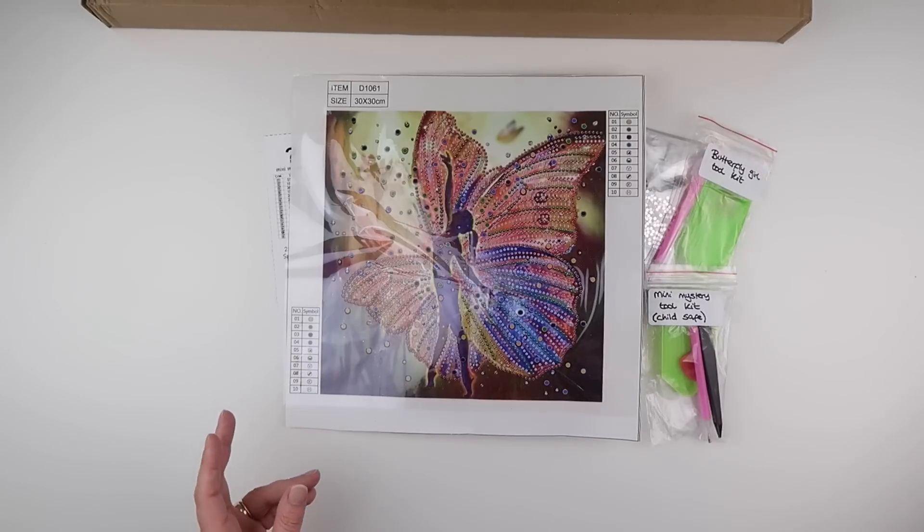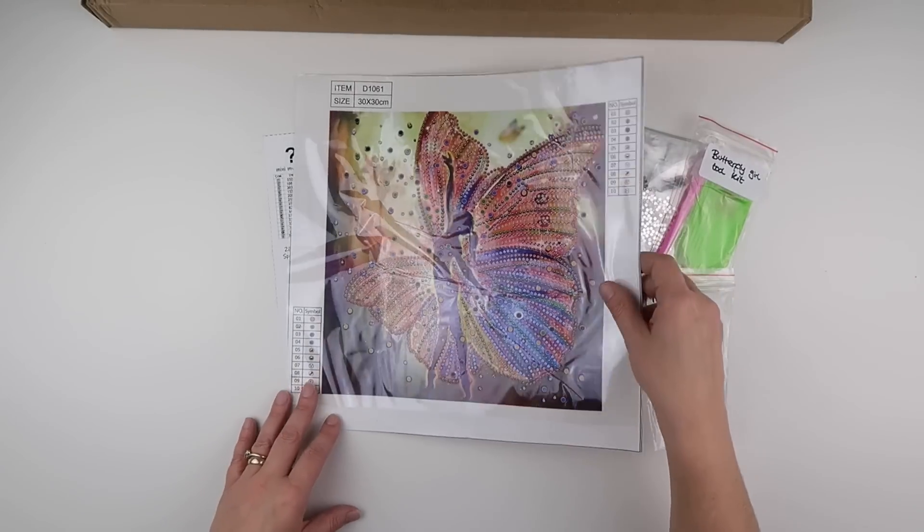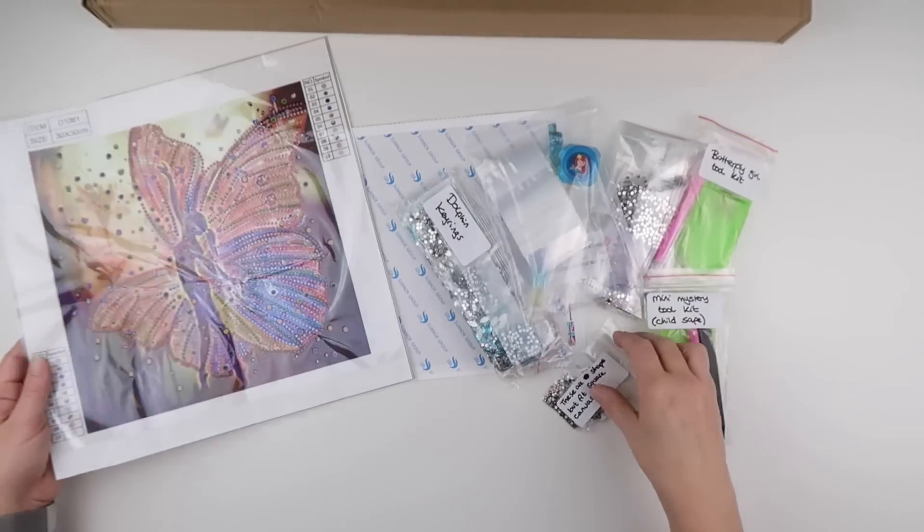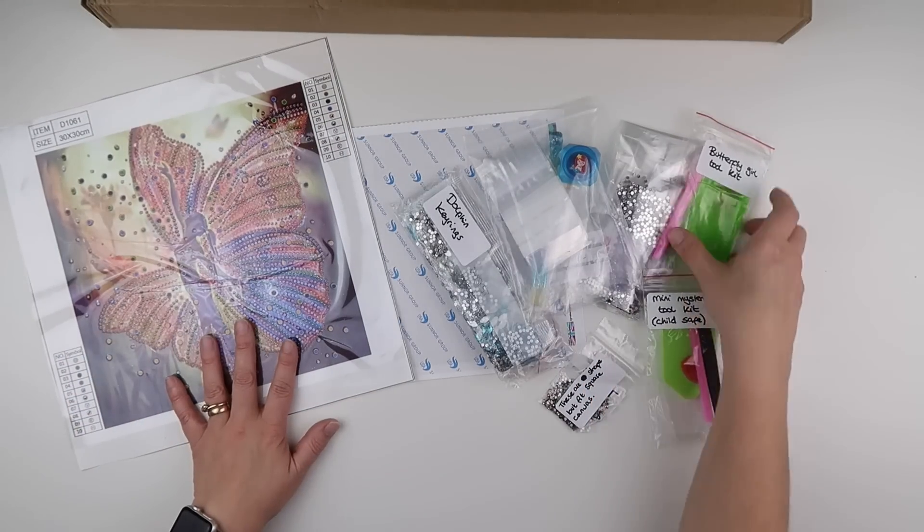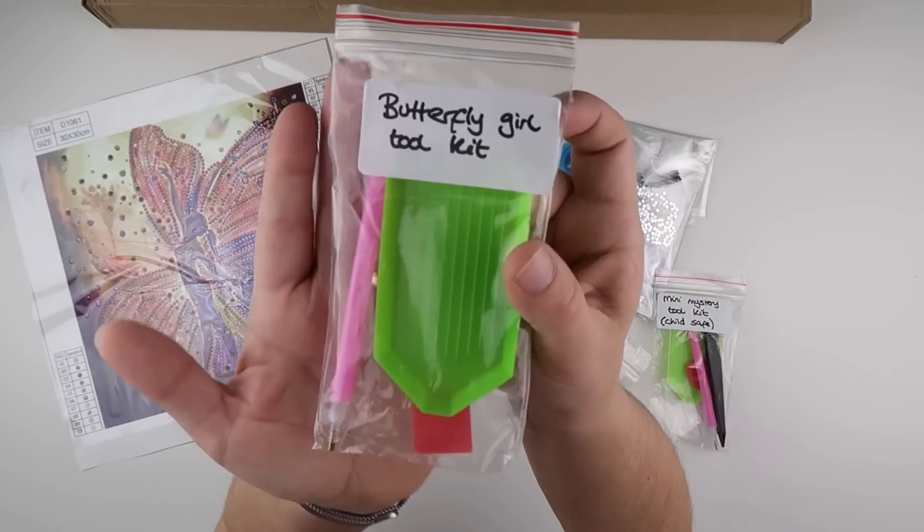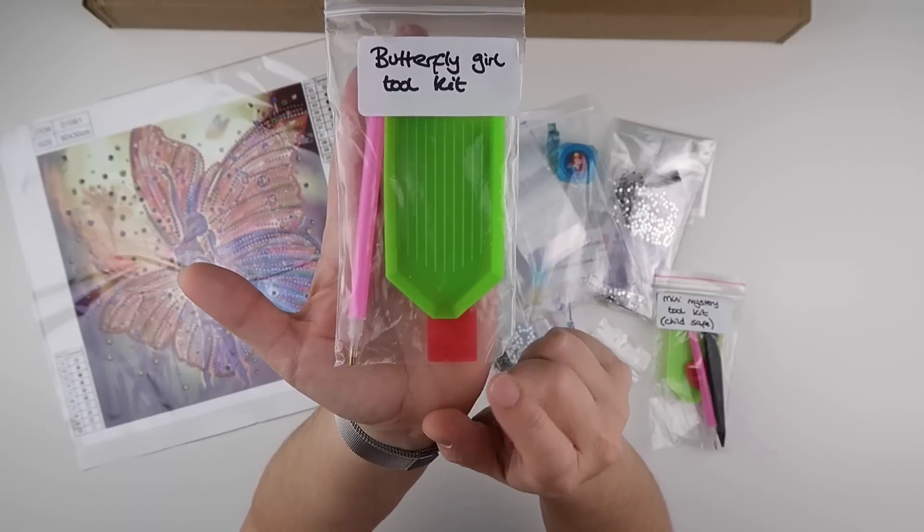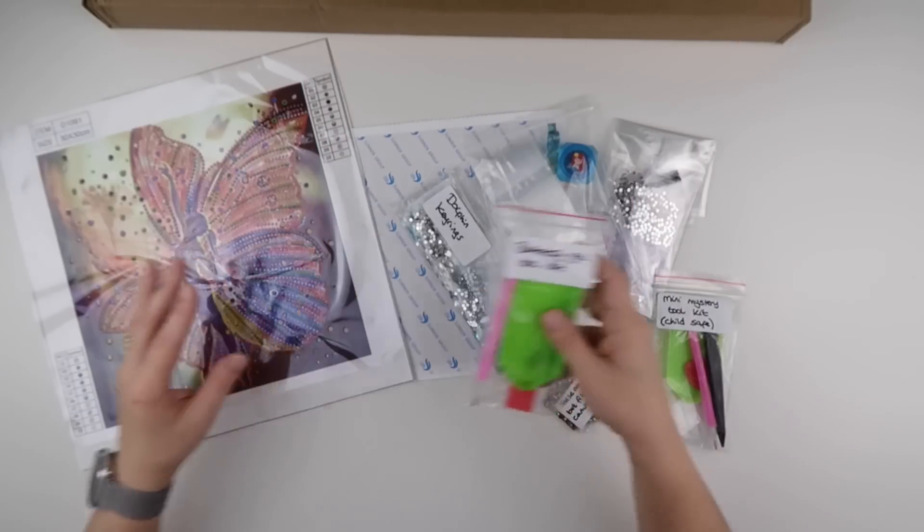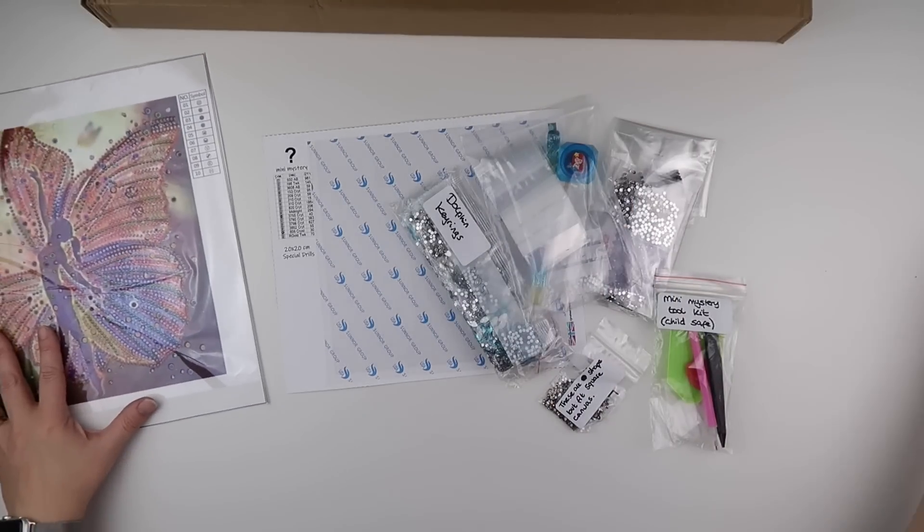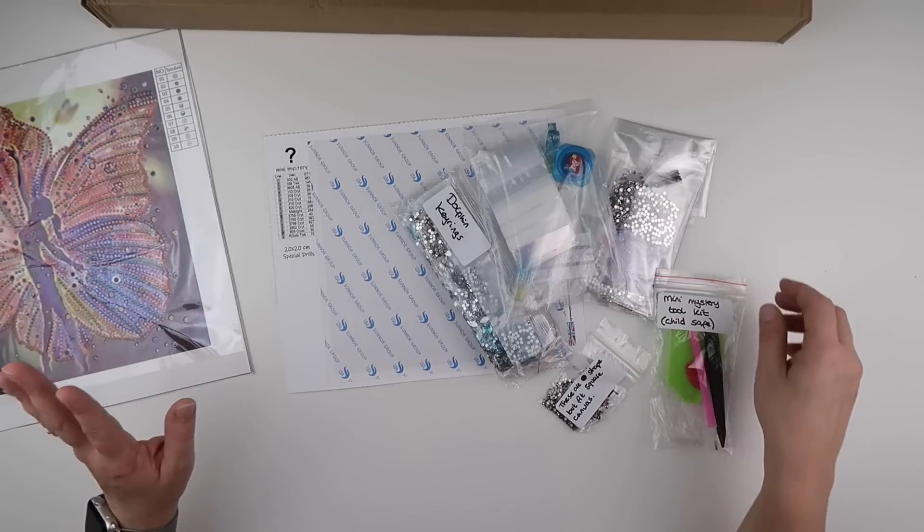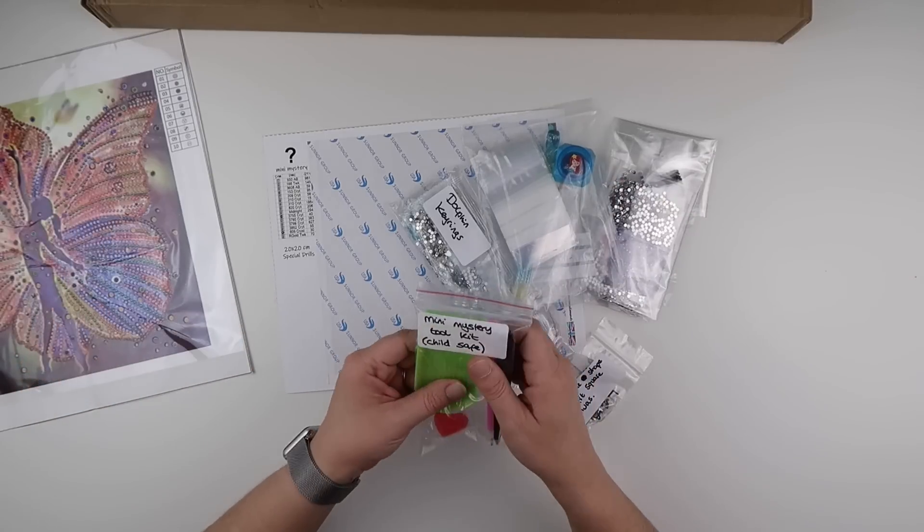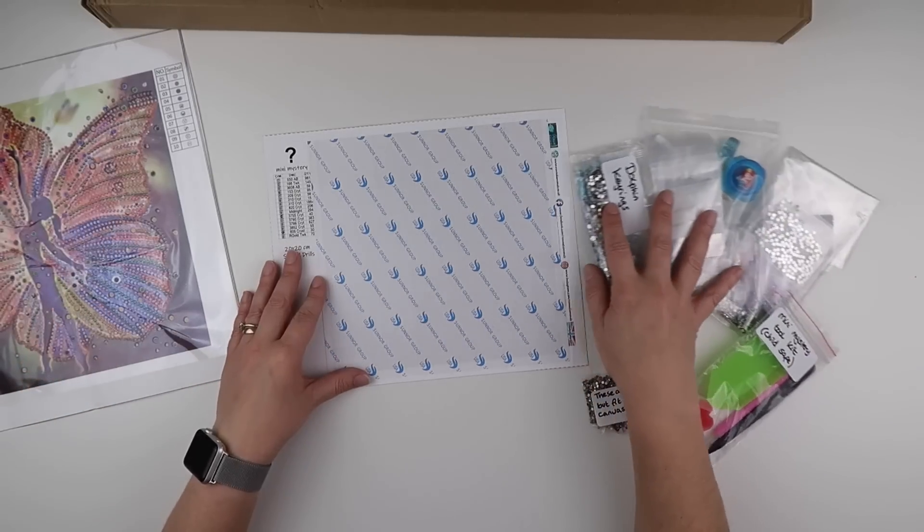So they're the diamonds to go with that one. I will pop them away properly later. So we've got a gorgeous special one there, and then there is a toolkit as well to go with that. It's got your standard boat wax and pen.